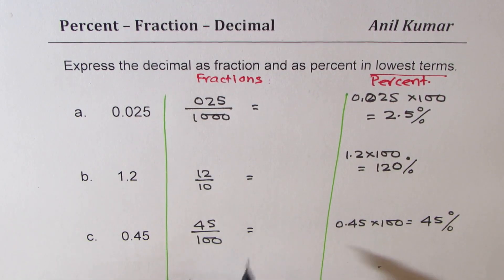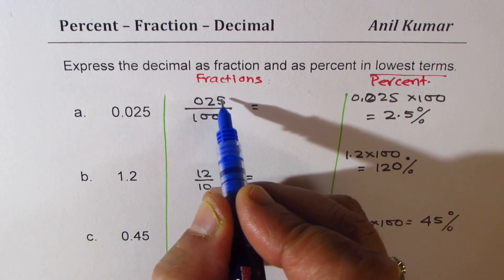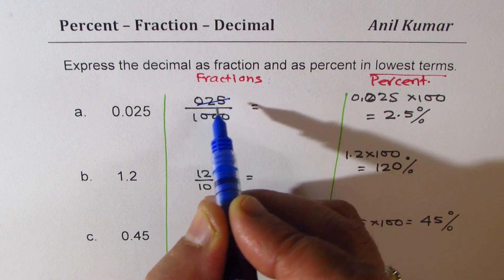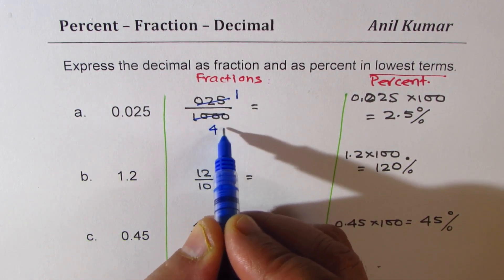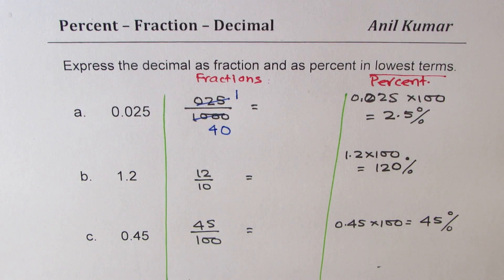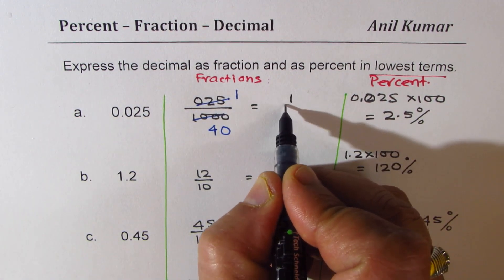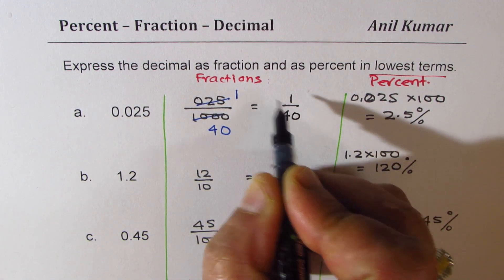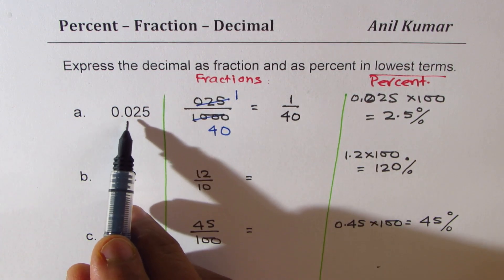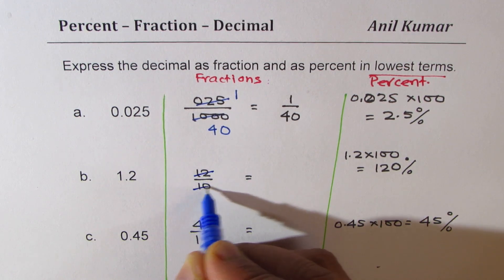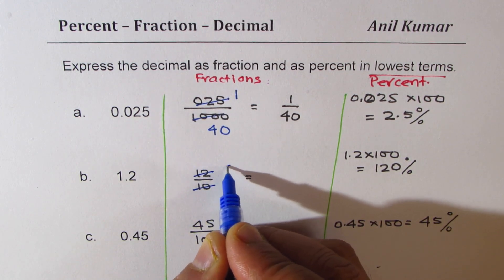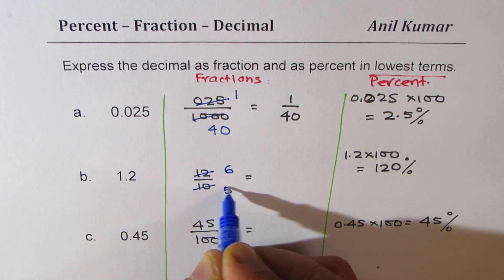We need to write them in lowest terms. For 25 over 1000, you could divide both by 25 — 25 times 1 is 25 and 25 times 40 is 1000 — giving you the fraction 1 over 40. For 12 over 10, we can divide both by 2, giving us 6 in the numerator and 5 in the denominator.